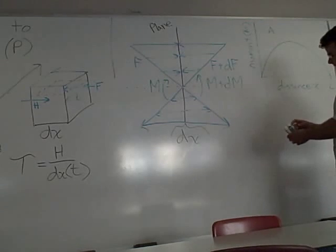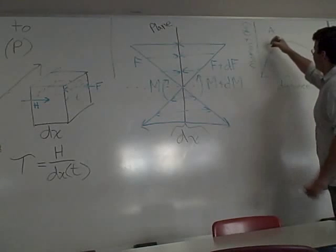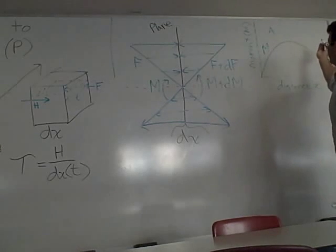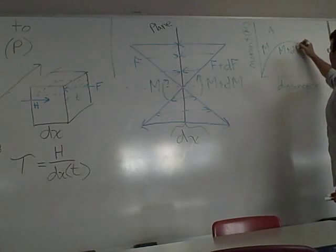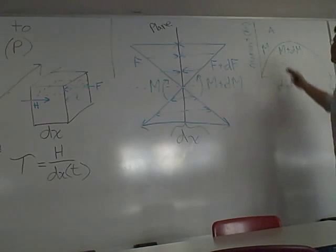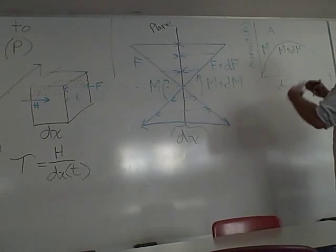So the moment on the left-hand side can be represented by M. The moment on the right-hand side is going to be M plus a little bit more, since the width of this is only dx, as the width approaches zero.